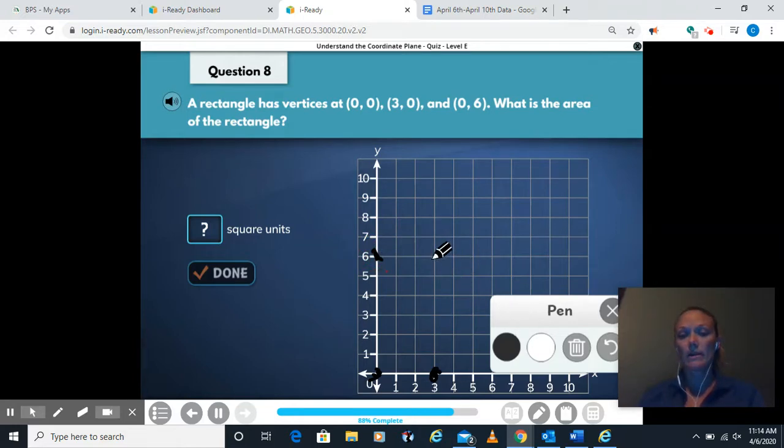Now if I'm making a rectangle, I know my other one, in order to make a rectangle, has to be right here, my other vertices. So then what is the area, right? If I had a rectangle here, what would the inside of my rectangle be?